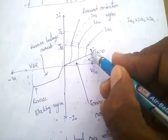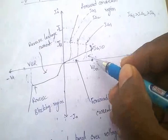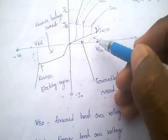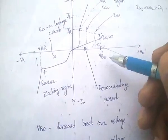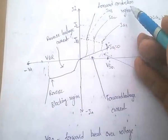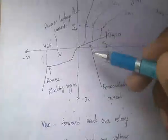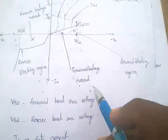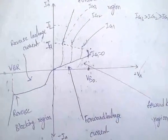The voltage at which the SCR starts conducting is called the forward break-over voltage (VBO). The region before VBO where only a small leakage current flows is called the forward blocking region, or forward leakage region. After VBO, the SCR enters the forward conduction region.